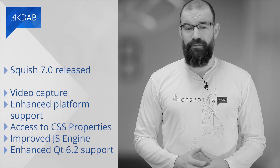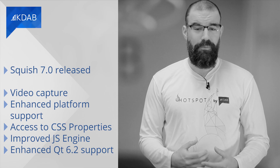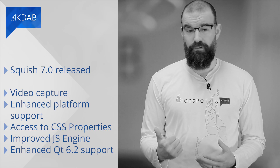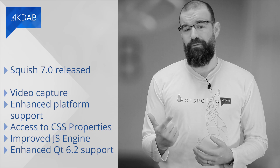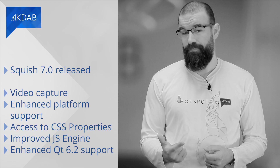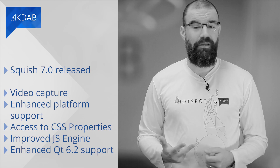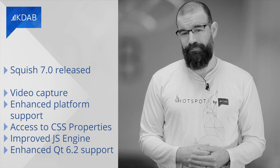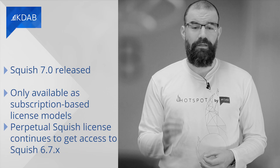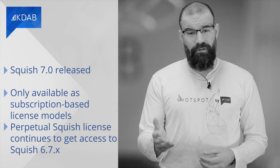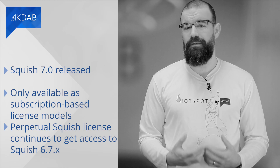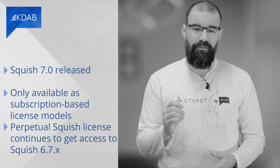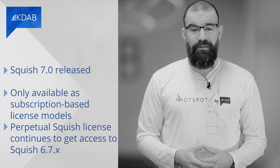After six years, the first major release for the Squish GUI tester has been released. Version 7.0 comes with a bunch of new features, such as video capture of test execution in Squish IDE and on the command line, enhanced platform support — for example, on Apple M1 — access to CSS properties for testing web applications, improved JavaScript engine, and enhanced Qt 6.2 support. With version 7.0, Squish will only be available on subscription-based license models. But customers who own a perpetual Squish license continue to get access to Squish 6.7.x and technical support for that. Find more info in the link added below and check out the webinar dates.